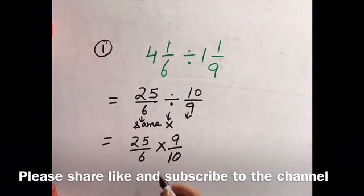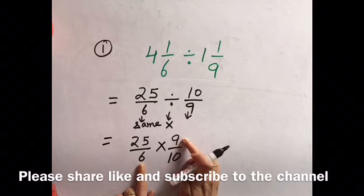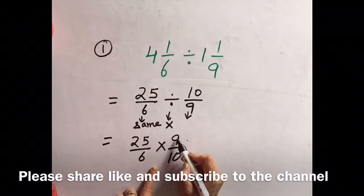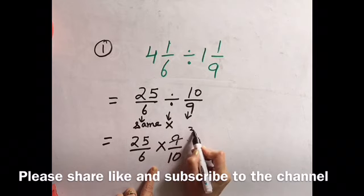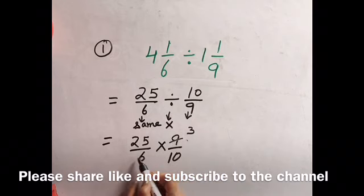Now you will have to cut it. As you can see, both 6 and 9 are divisible by 3. So I will divide both of them by 3. So if 9 is divided by 3, we will get 3. When 6 is divided by 3, we will get 2.